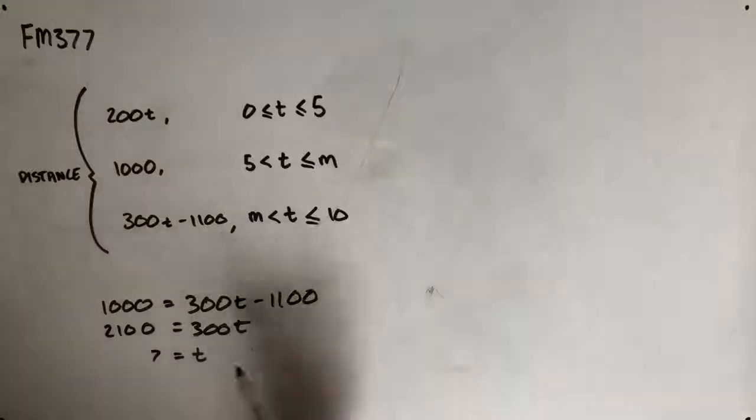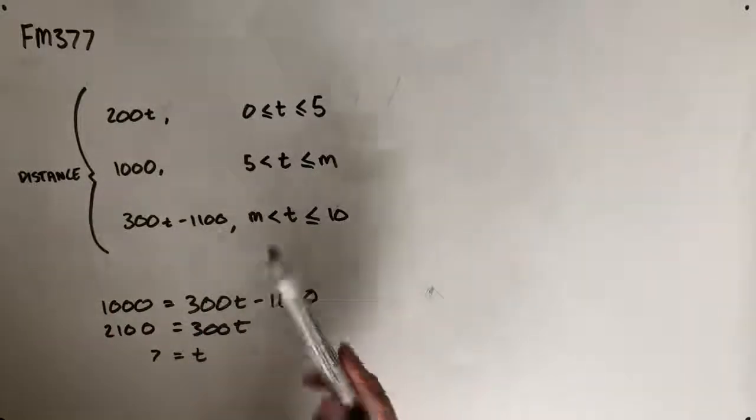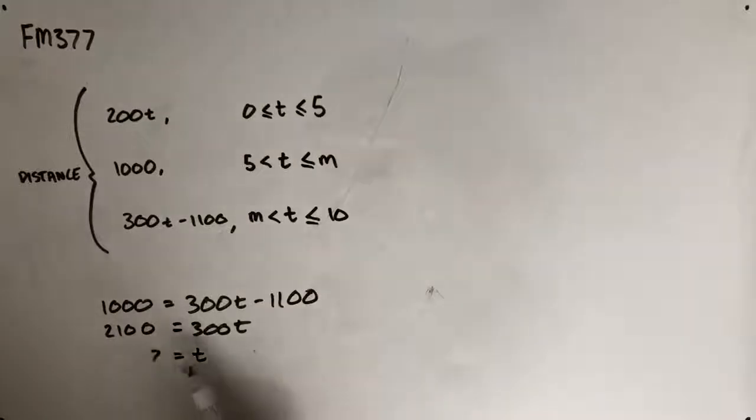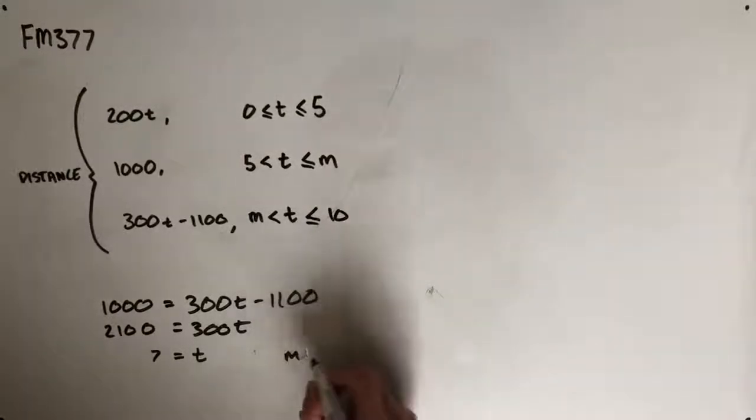So since we've found the time at which it would seem that Olivia crosses from this leg of her journey to this leg, we can say that since the time there was 7, 7 is going to be our value for m.